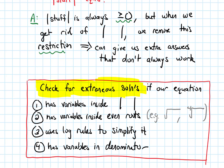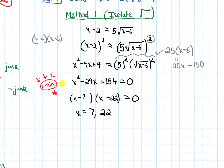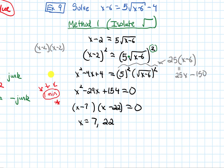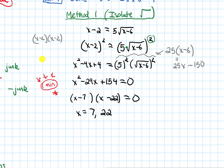As mentioned at the end of the last video, one case where I need to check for extraneous solutions is when I have variables inside even roots, like a square root. We have that in this problem, so we are going to need to check for extraneous solutions.